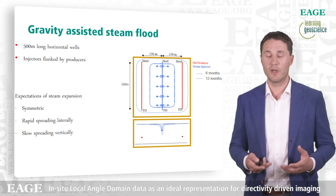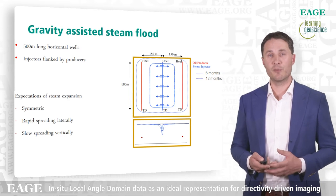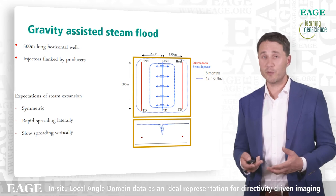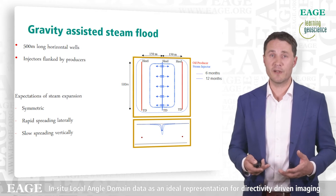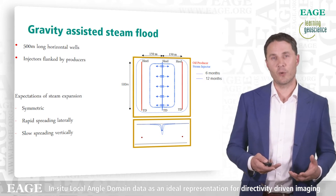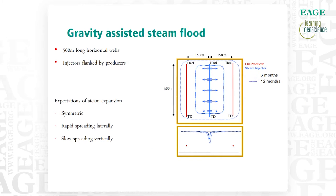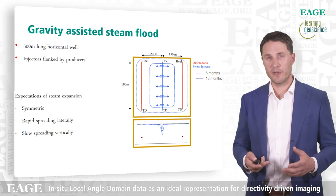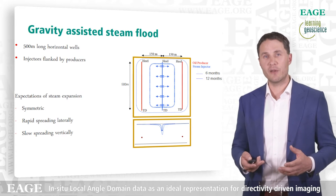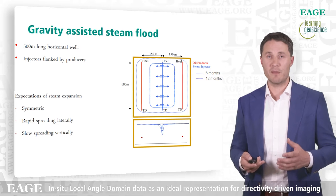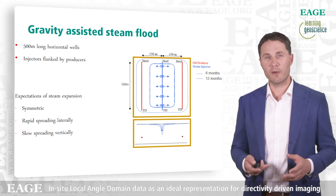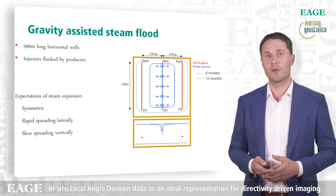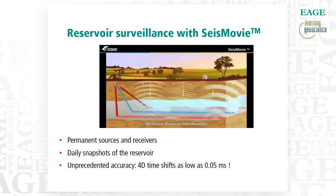One easy way to do monitoring is to measure the salinity of the produced water. The formation water in the reservoir is much saltier than the water we inject. So when we see the salinity of the produced water drop over time, we know the steam front is near. That works and it's very simple and effective, but it doesn't tell us how the steam front behaves in between the injection well and the production wells. For that we need an aerial view, and that's where surface seismic comes in.